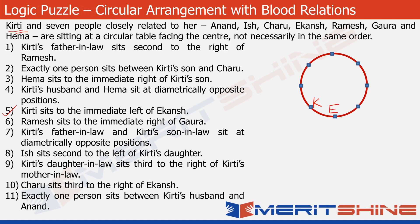The next statement we use is statement 10. It says that Charu sits third to the right of Ekanch. So this is Ekanch here, and the position of Charu would be 1, 2, 3 — so let's put C here. C denotes Charu, and she is now at the third position to the right of Ekanch.